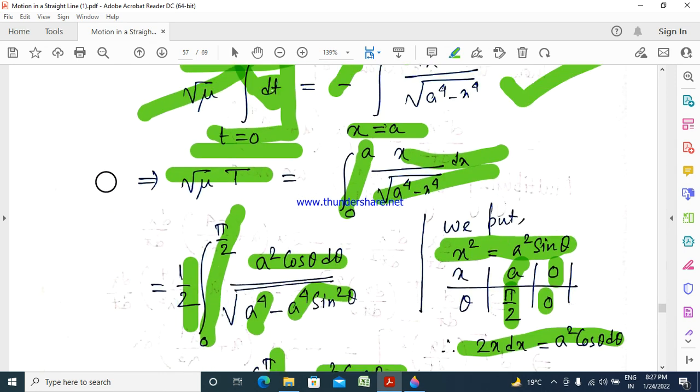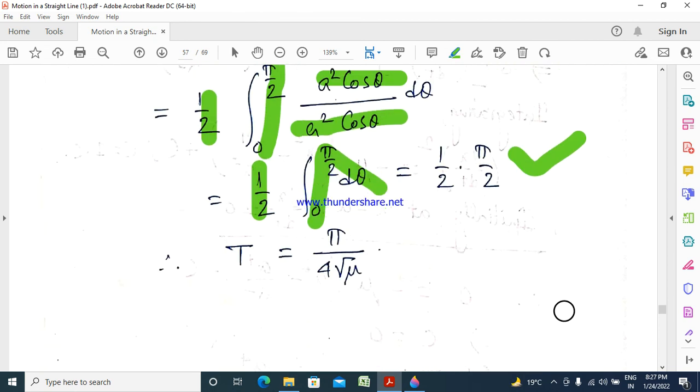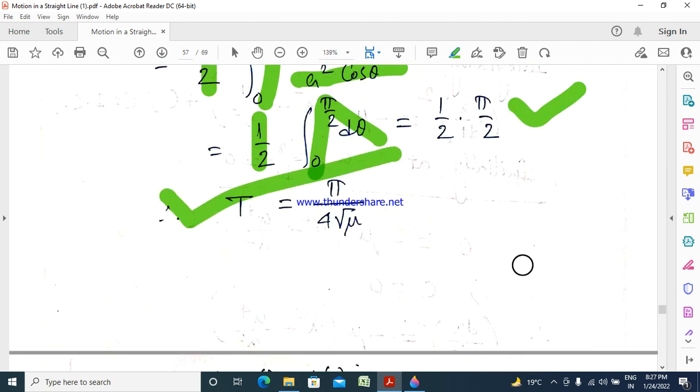Therefore root mu T equals pi by 4, so T equals pi by 4 root mu. This is the required time.